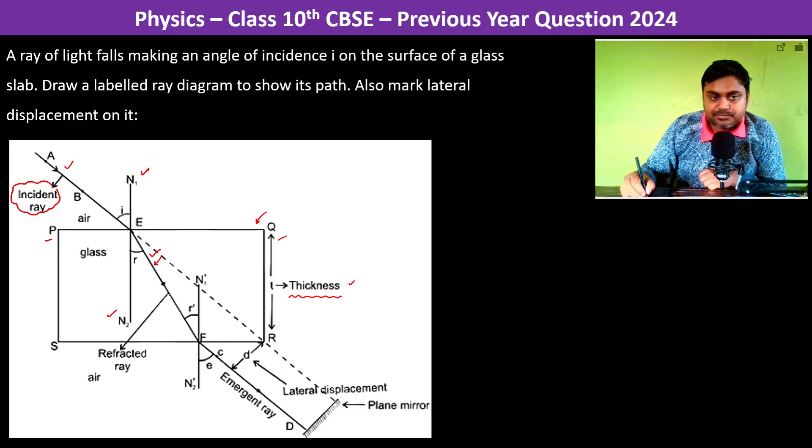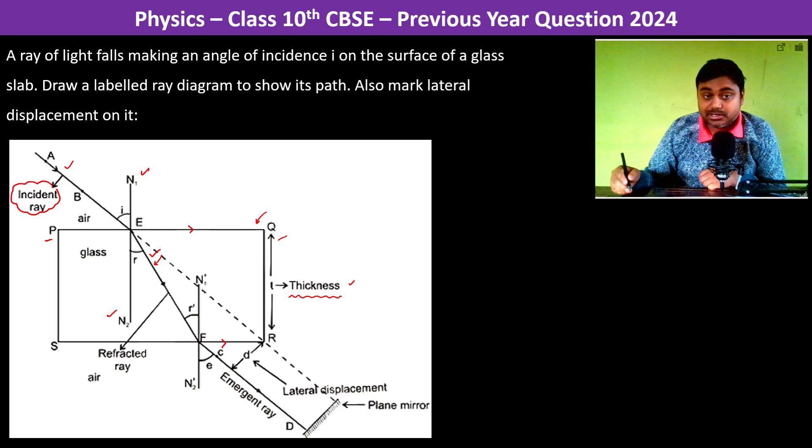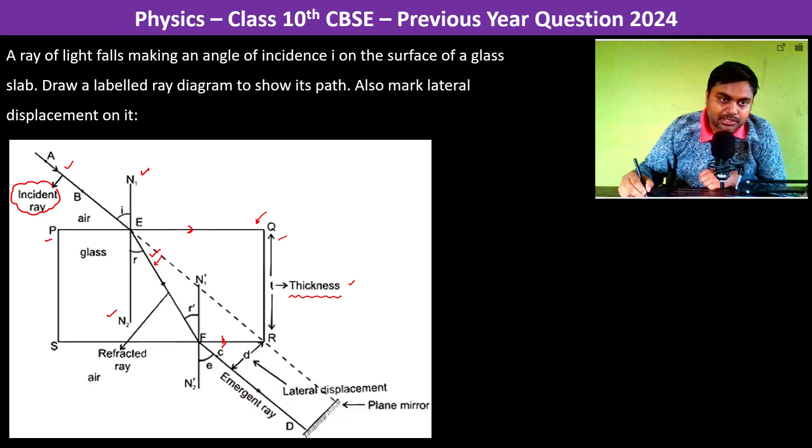Now this refracted ray again reaches the second interface. Since both PQ and SR are parallel by the definition of glass slab, therefore what happens is since they are parallel, the angle of refraction which is r here becomes the angle of incidence. r is equal to r'.